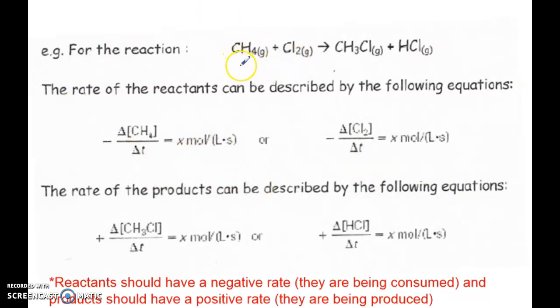So here we have methane and chlorine, so then we have chloromethane and then hydrogen chloride. So this is actually a substitution reaction. You remember that from organic. So let's say we were to talk about the reactants - this is like change in methane over change in time. Notice a negative. If we were looking at chlorine, again, negative. If we were looking at the products, now we would be discussing a positive. We are producing HCl. We are producing CH3Cl.